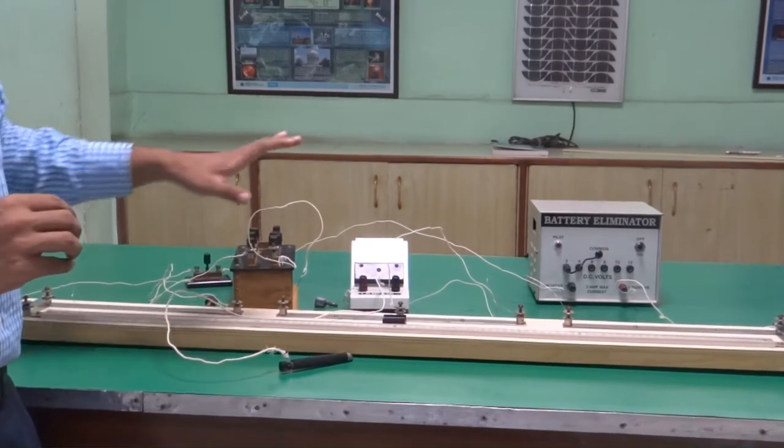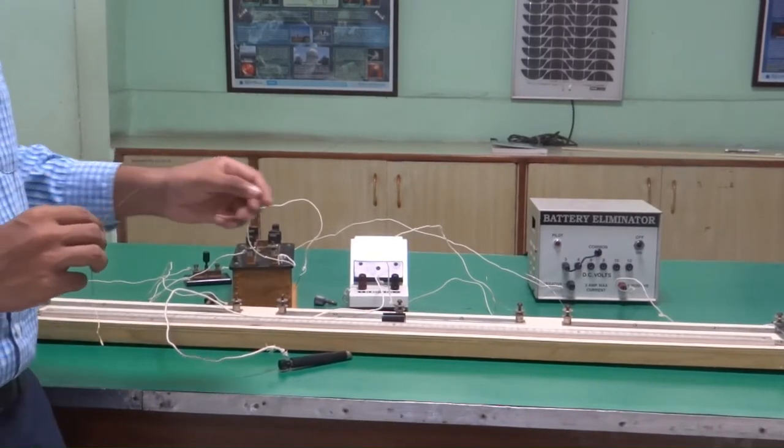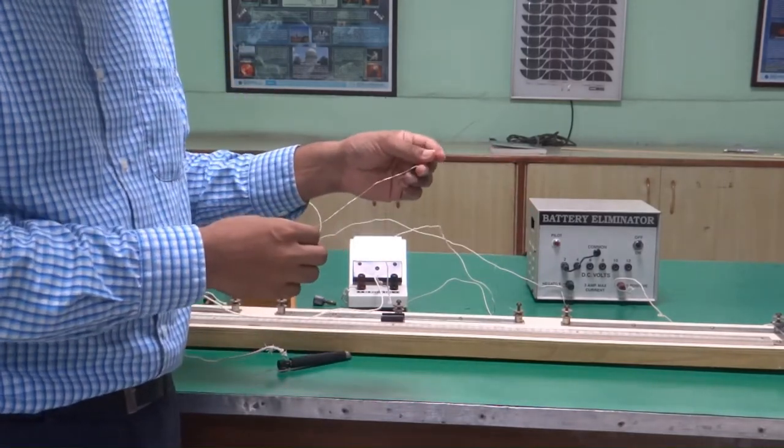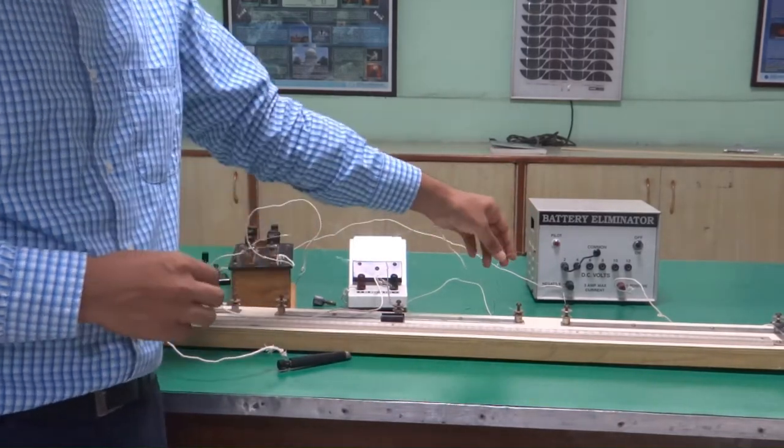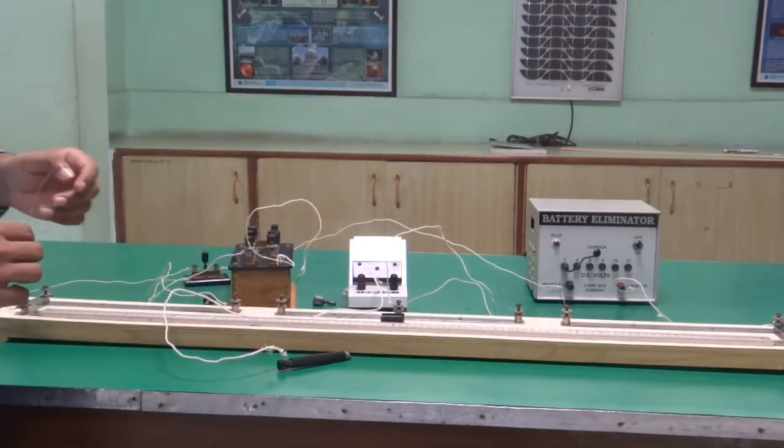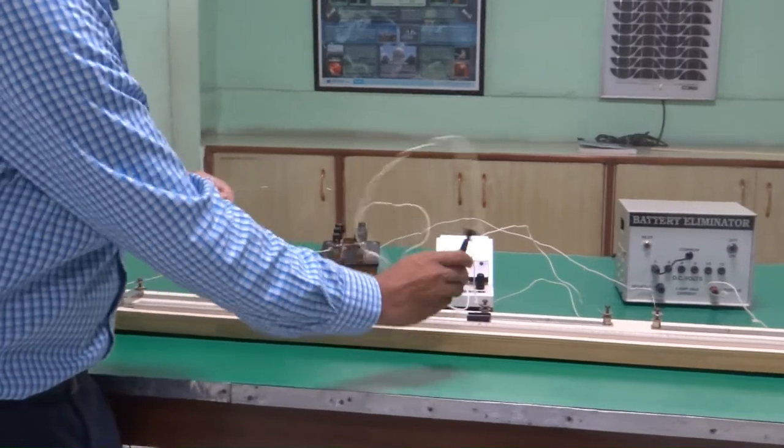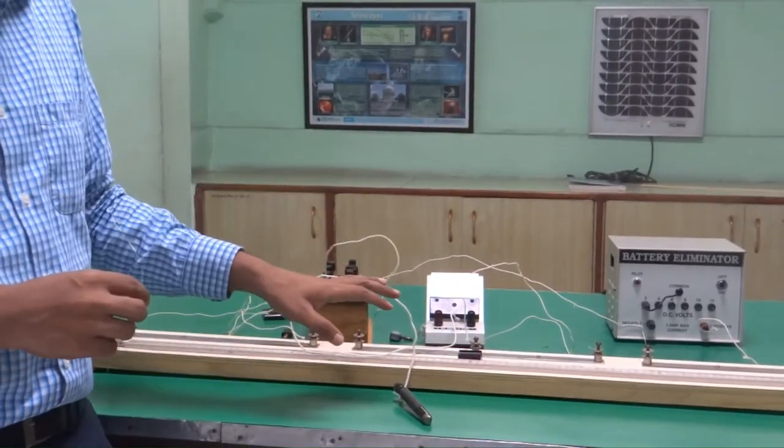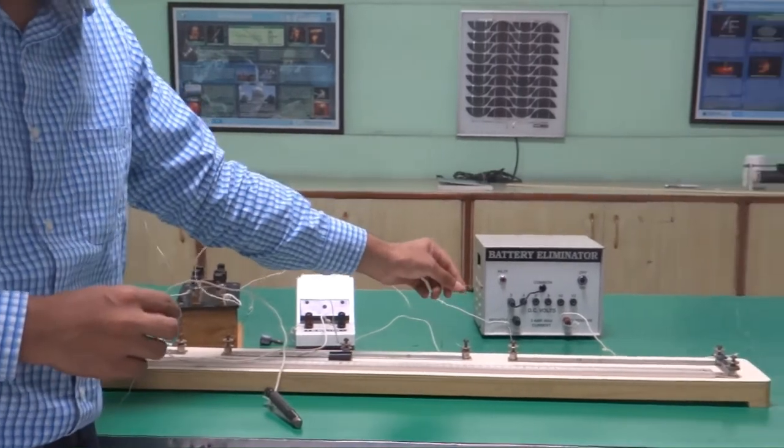For this, everything remains the same. We will be using two wires, one which is attached over here and take another wire of a length. Let's say the resistance of this wire is x1. So, perform the same set of experiment. Calculate the null point using the jockey. This time only take two sets of reading and determine what is the value of x1.